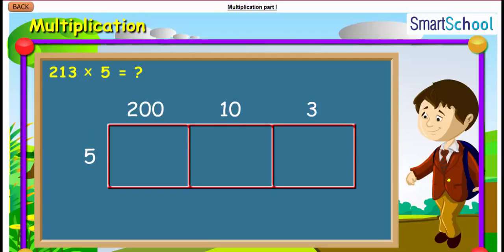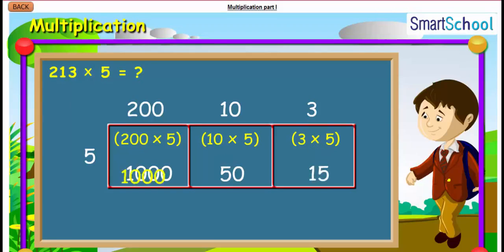we get 200 into 5 plus 10 into 5 plus 3 into 5, which is equal to 1000 plus 50 plus 15, total sum being 1065.